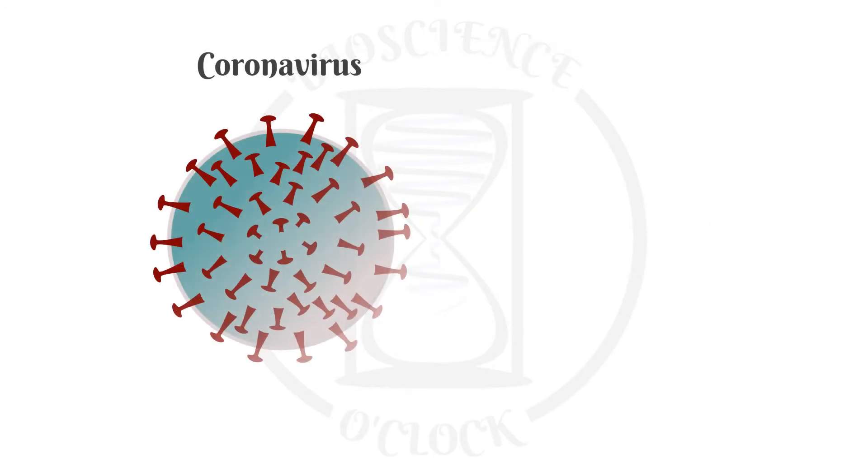Human coronaviruses were described in the 1960s in patients with the common cold. Currently, there are seven types of coronaviruses known to infect humans. Among those, some cause the common cold, but others, such as SARS-CoV-1, MERS-CoV, and the most recent SARS-CoV-2, cause severe respiratory diseases.